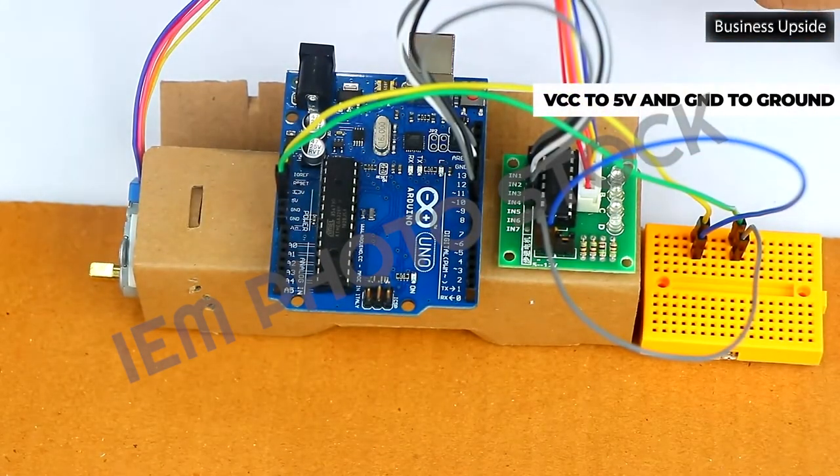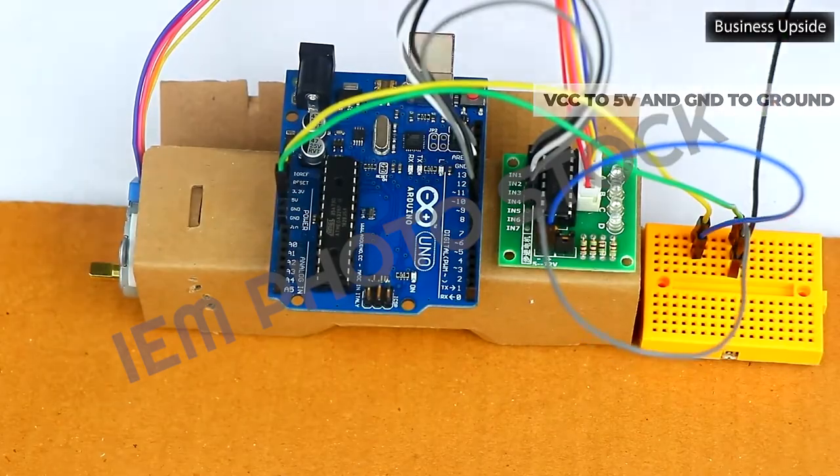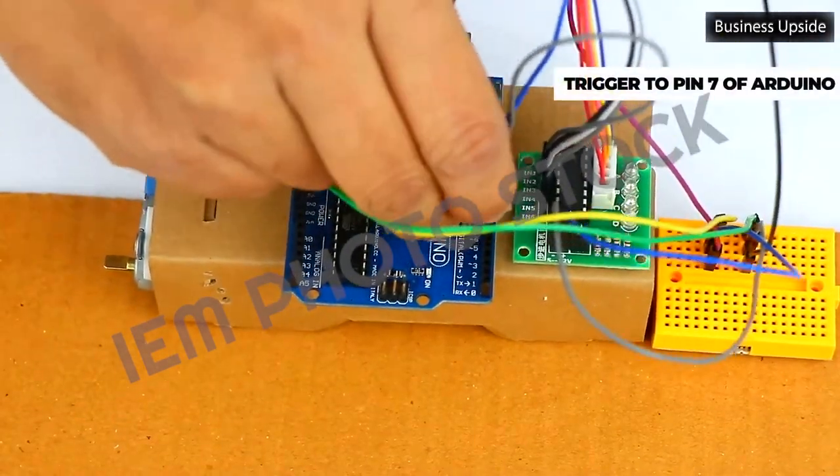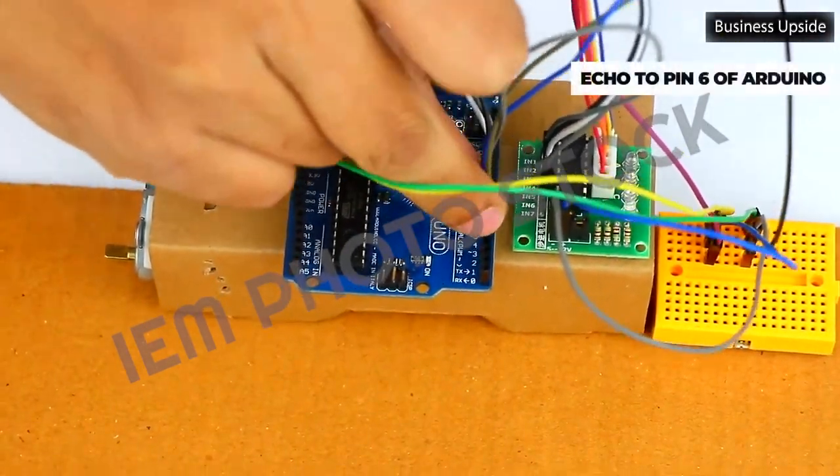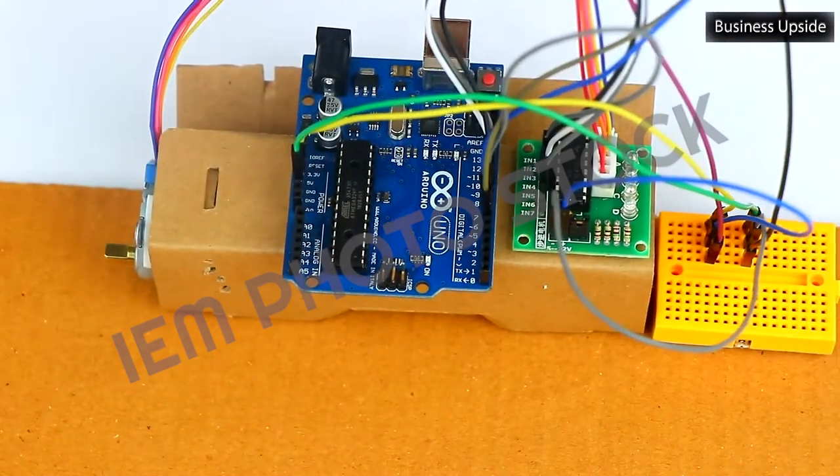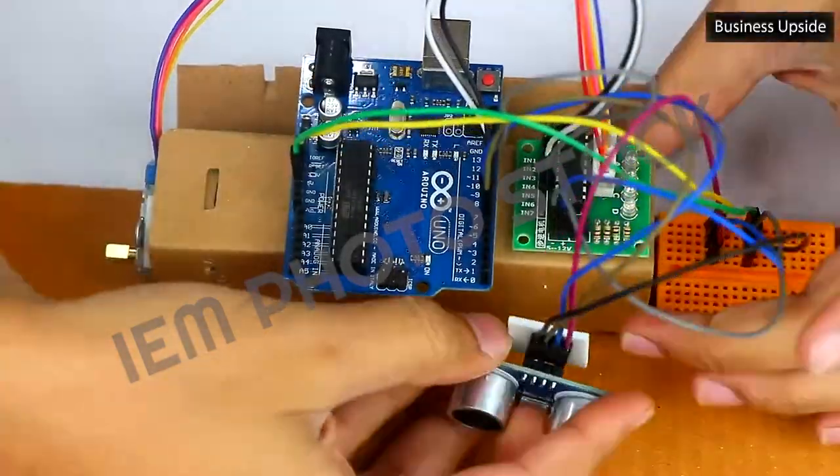Connect the VCC to 5 volts and GND to ground. Connect the trigger to pin 7 of Arduino. Connect the echo to pin 6 of Arduino. Then, with double-sided tape, place the sensor.